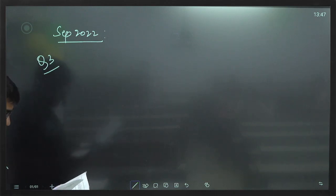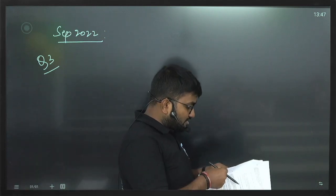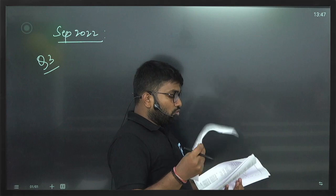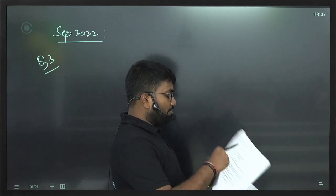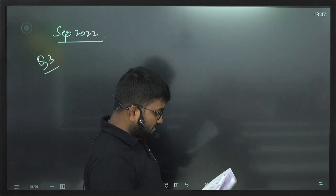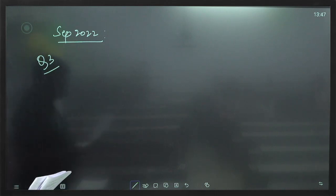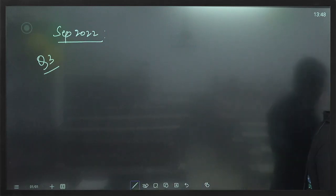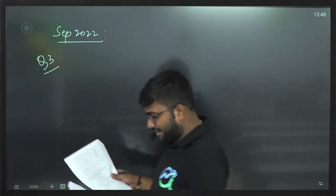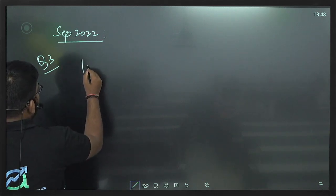First of all, if we look at the missing figures, we look at Bt. We have been given ft-1,t as 0.9%. So how do we do this?